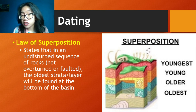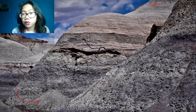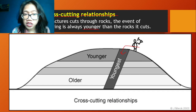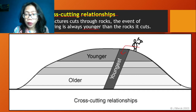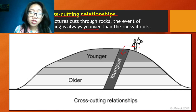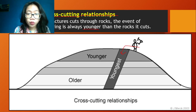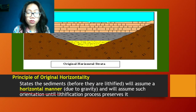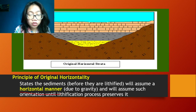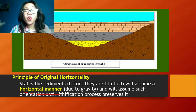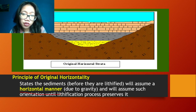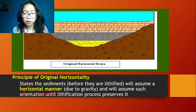But that's not always the case. There are certain scenarios where younger rocks may cut through and disturb the conformity. Conformity means the rock layers conform to the principle of original horizontality and the law of superposition.